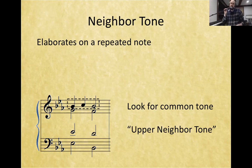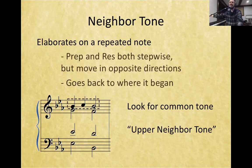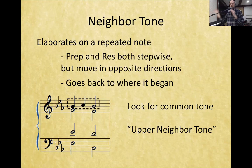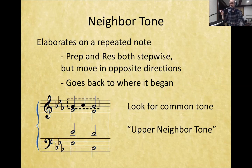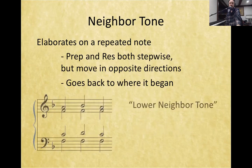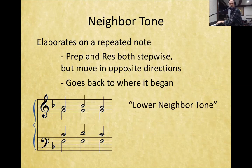Just like the passing tone, neighbor tones can go either upwards or downwards — the direction doesn't really matter. What matters is that it elaborates on a repeated tone and that it's completely stepwise. Both neighbor tones and passing tones are completely stepwise. The key difference is that passing tones go all in the same direction, whereas a neighbor tone resolves back in the opposite direction — what goes up must come back downwards.